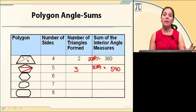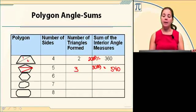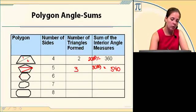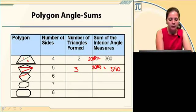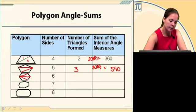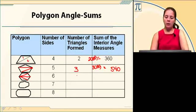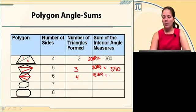Let's do the same thing with a six-sided polygon or a hexagon. Pick one vertex, any one you want. Draw all the diagonals possible from that one vertex. Count your triangles. Take the number of triangles times 180, sum of the interior angles.